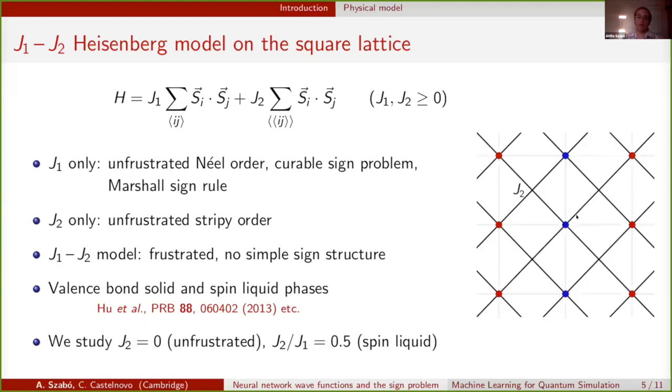The alternative limit is when we don't have any nearest neighbor interactions, only second neighbor interactions. It turns out that this problem is again unfrustrated, and this time we end up with a stripy order, which gives rise to its own Marshall sign rule, which has the same kind of stripy structure.